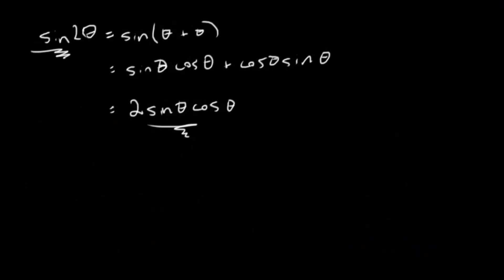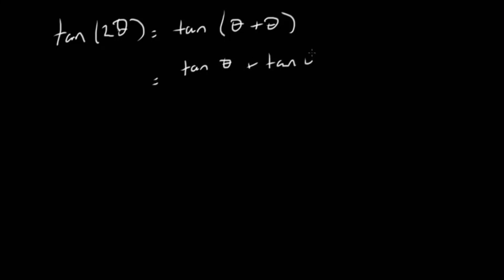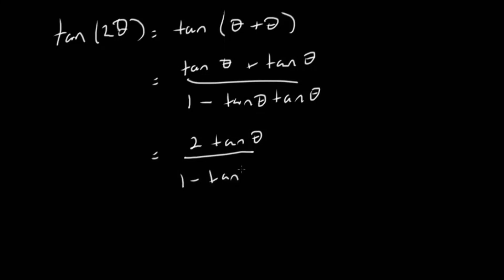We have sine 2 theta and three formulas for cosine 2 theta. Now let's get tangent 2 theta. Let's utilize the same strategy — break 2 theta into theta plus theta and use the tangent addition formula. Tangent of theta plus theta gives tangent theta plus tangent theta all over 1 minus tan theta times tan theta, which simplifies to 2 tan theta all over 1 minus tan squared theta. That is our formula for tangent 2 theta.